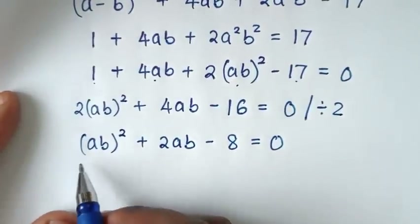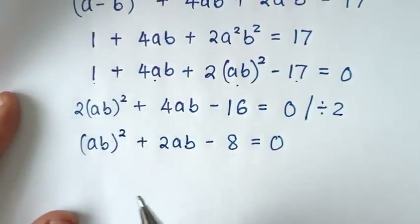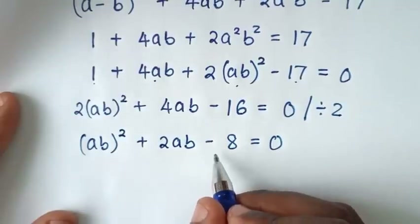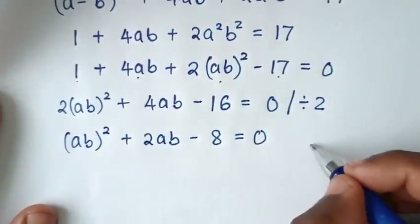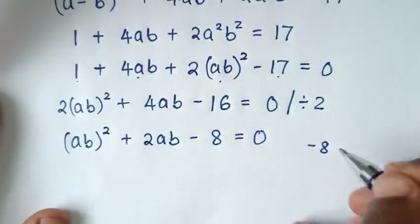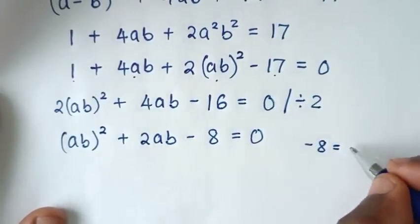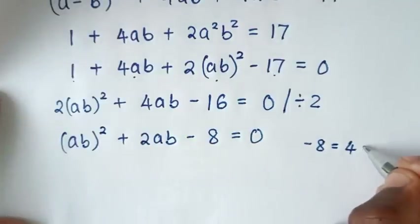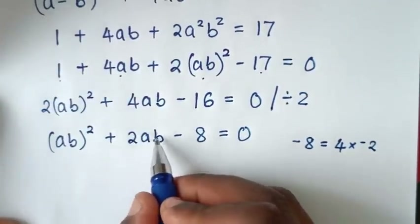Now from this quadratic equation in the form of ab, it can be solved by grouping and factorization. Because the constant here is -8, and -8 is the product of 4 times -2.